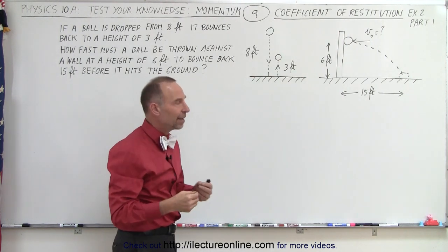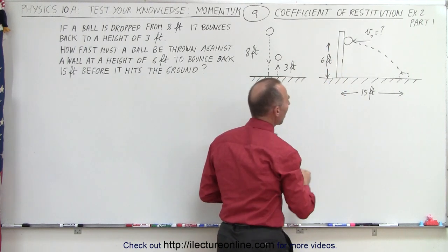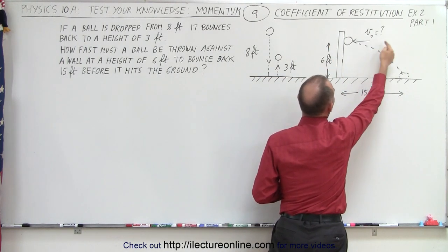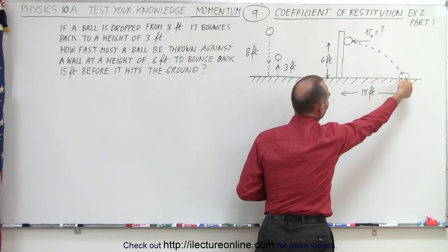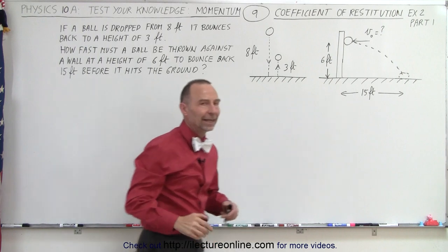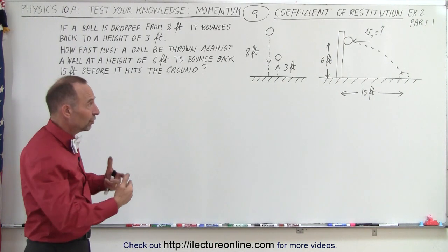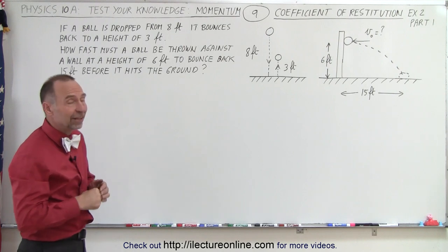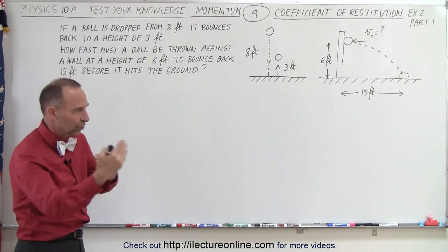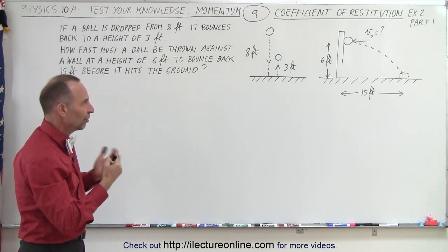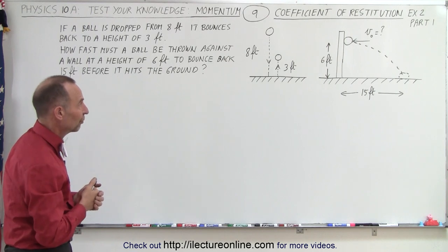If we take that same ball and that same type of surface, but in this case it's a vertical wall, how fast do we need to throw the ball against the wall at a height of 6 feet such that it bounces back a distance of 15 feet before it hits the ground? We'll do this using imperial units, and in the next example we'll do the same problem using metric units, to reinforce the concept of coefficient of restitution.